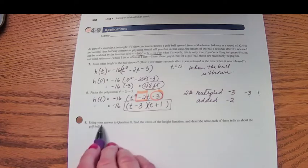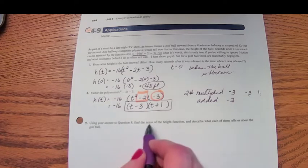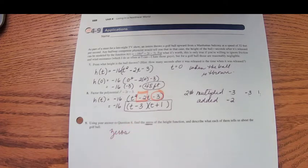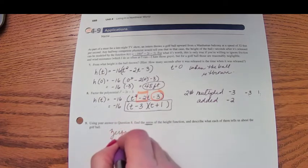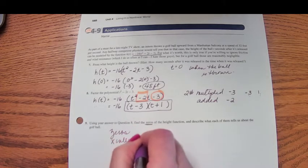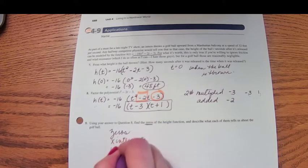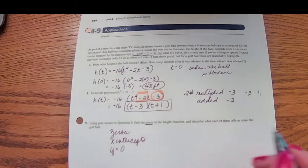So question 9 says find the zeros. The zeros—that's another way of saying x-intercepts. That's another way of saying when y equals 0. In other words, when does my equation equal 0?